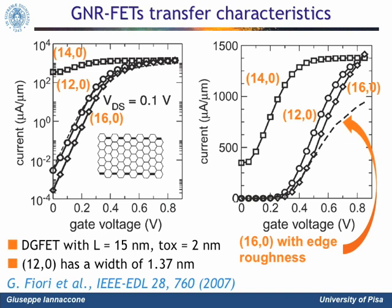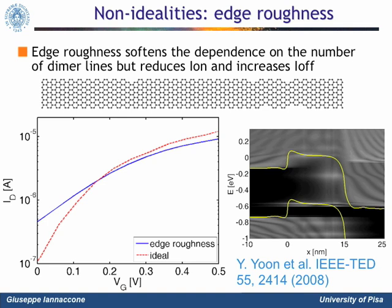The rough edge FET is represented by the dashed line in both figures. As you can see, the subthreshold behavior is only slightly degraded, at the price of a reduced on-current of about 30%. The rough edge nanoribbon shows that the on-current is suppressed because rough edges cause scattering and therefore reduced mobility, while the off-current is increased because there are localized states in the gap, as can be seen in this grayscale map of the density of states shown on the right. The localized states in the gap increase the quantum capacitance of the channel and therefore degrade the capability of the gate to control the potential of the channel.